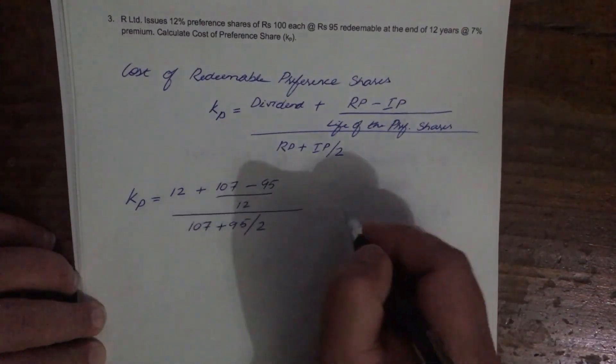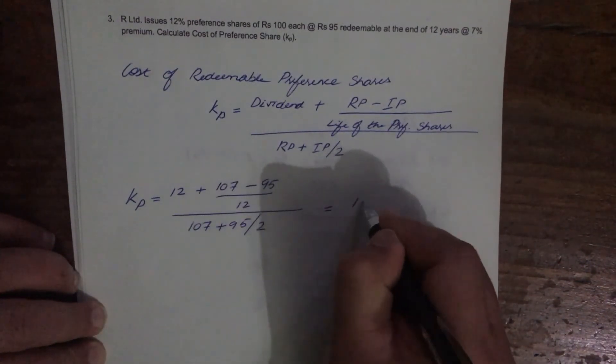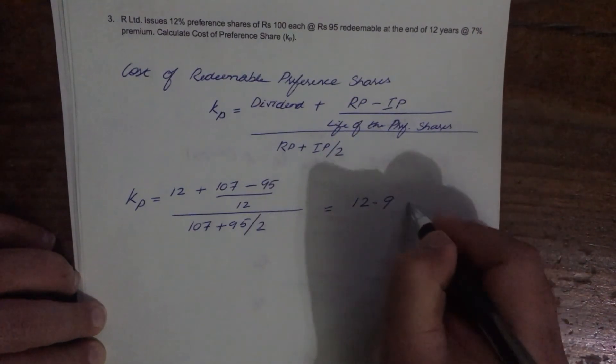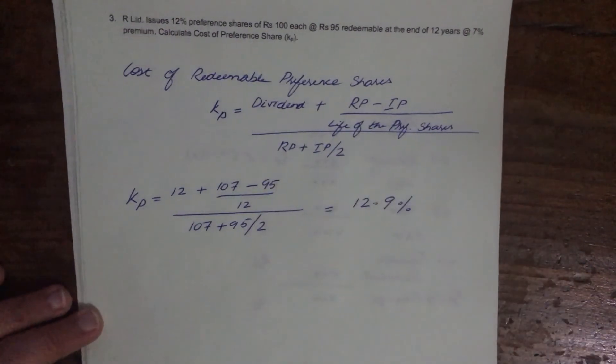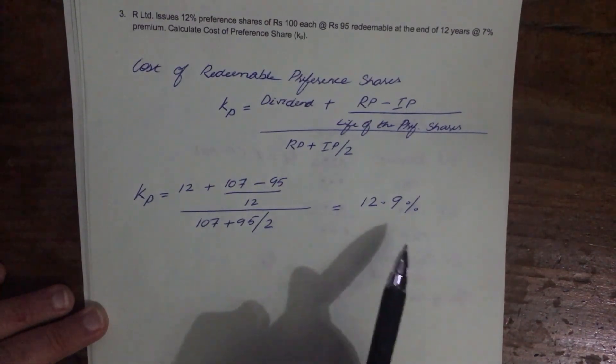When you do the calculation, you will get 12.9%. So that is your cost of preference capital — 12.9%.